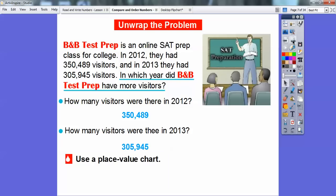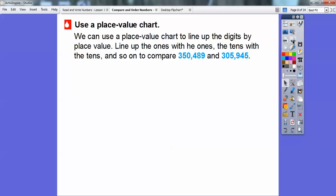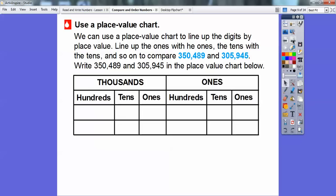We'll use a place value chart to line up the digits by place value. Line up the ones with the ones, the tens with the tens, and so on. We're going to line them all up right on top of each other. Here's the place value chart and I'm going to put in those two numbers: 350,489 and 305,945. I'm going to slide it up on top right there.